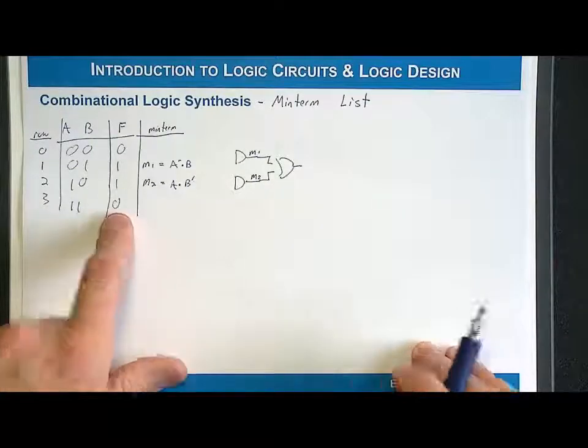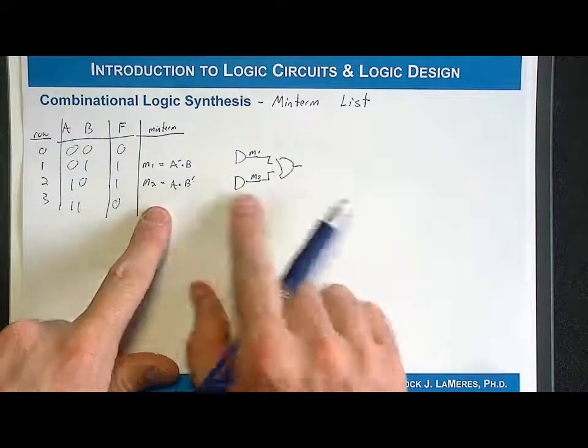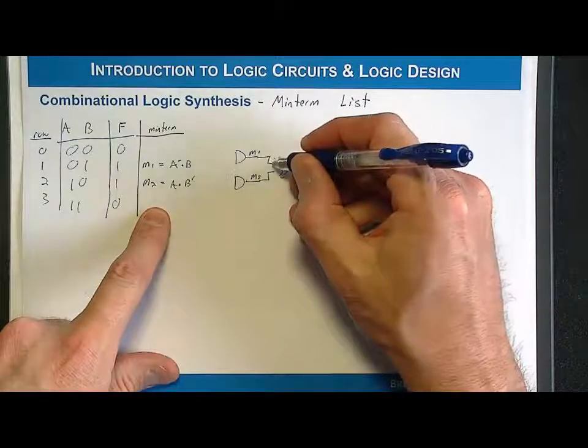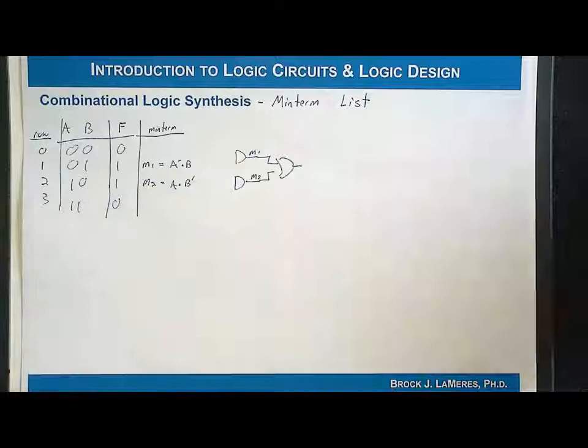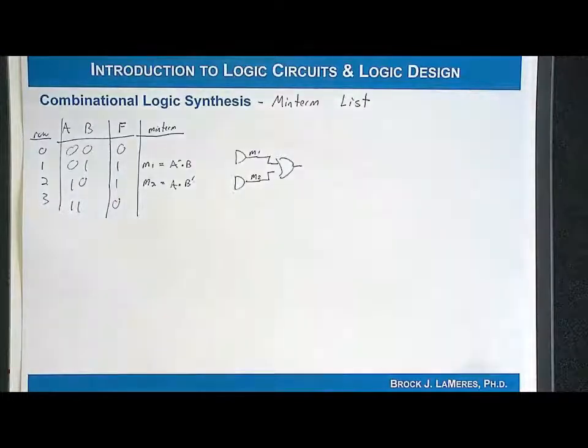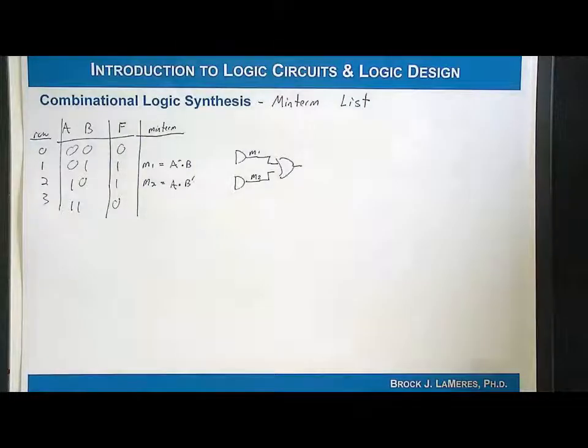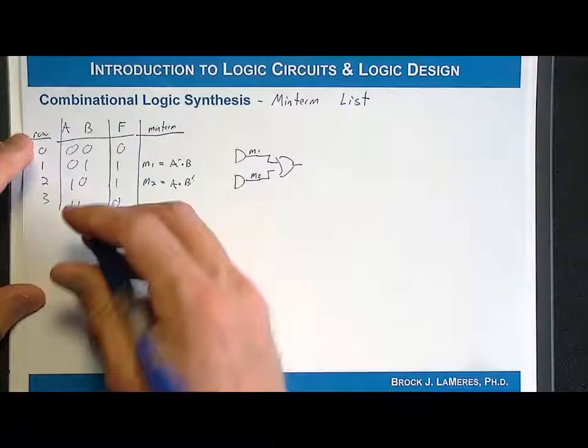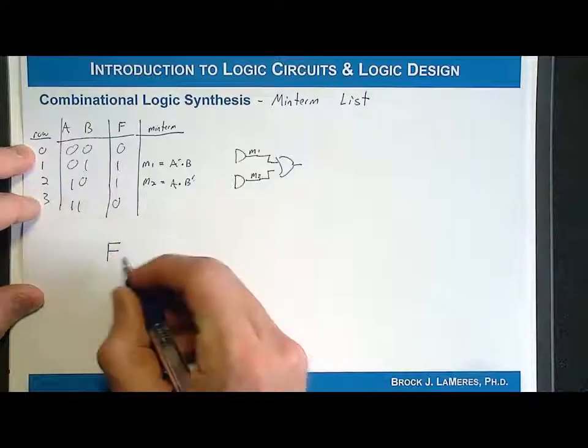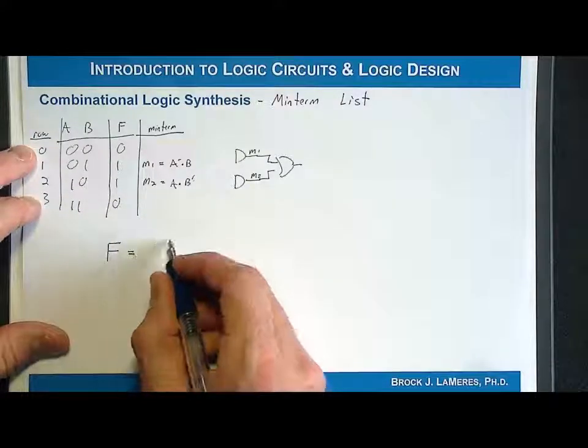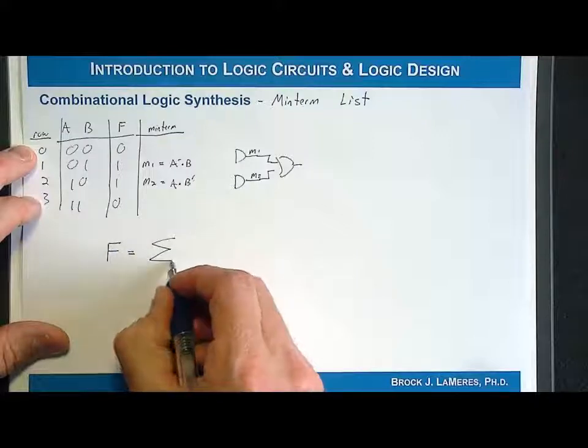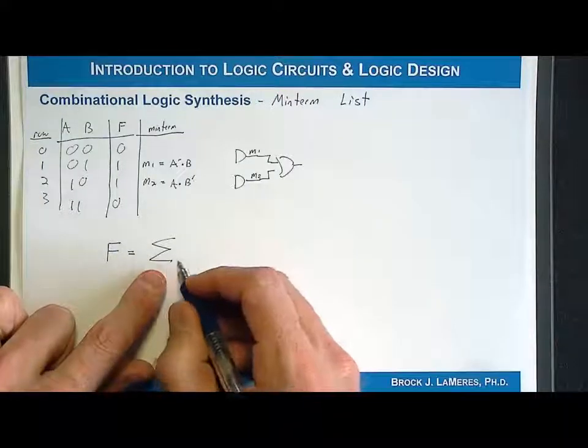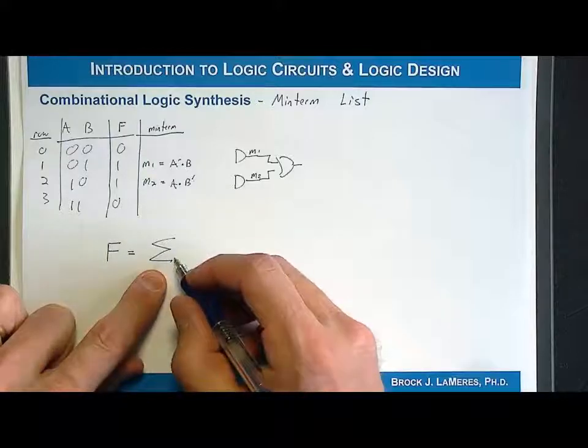As truth tables get larger and larger, sometimes the minterms get larger and the logic diagram gets excessively large. A minterm list gives us a way to describe the functionality using more of an equation form factor. We write the output variable, the output like this: F equals, and then we use the capital sigma symbol to represent that this is going to be a minterm list.